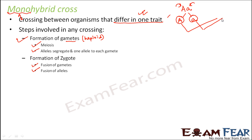The zygote is the diploid cell formed as a result of fertilization. The process of sexual reproduction remains the same — meiosis occurs at the level of alleles and chromosomes. The alleles first segregate, give rise to gametes, and then fuse together again. We will now perform Mendel's same experiment but from the perspective of a mono hybrid cross — looking at how gametes are formed, how fusion takes place, and how the zygote is formed.